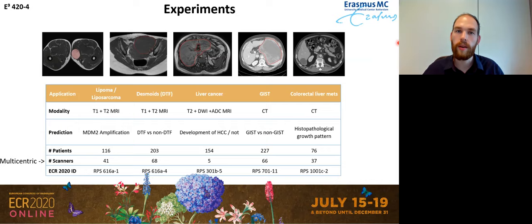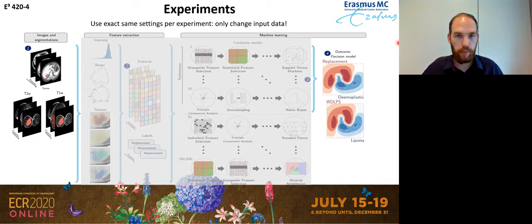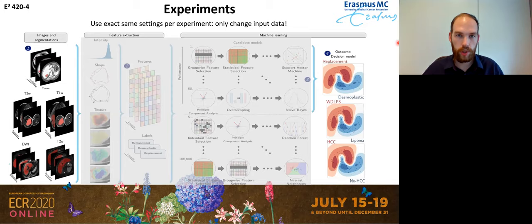For all of these I have another talk, so if you're interested please go to those specific sessions. I want to stress that for all these experiments we use the exact same settings per experiment — we only change the input data. So the platform stays the same: if we input liver CT data, we use the platform and get a specific signature; for a different application, we only change the input data and get a different model, and so on — using exactly the same settings.